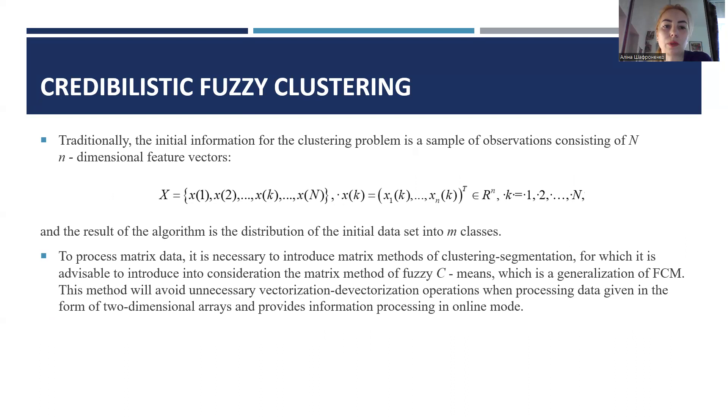Traditionally, the initial information for the clustering problem is a sample of observations consisting of n-dimensional feature vectors demonstrated on this slide, formula 1. And the result of the algorithm is the distribution of the initial data set into n classes.